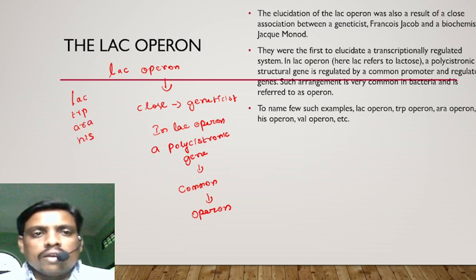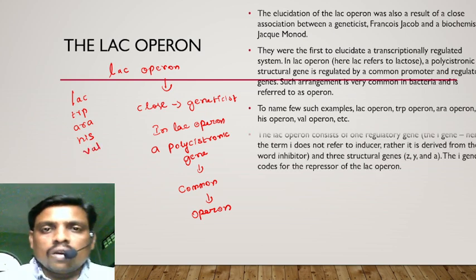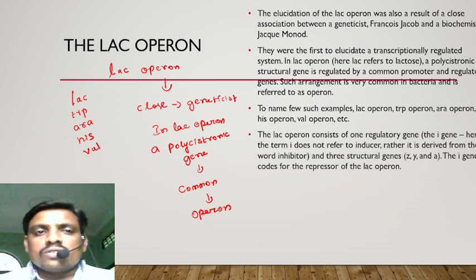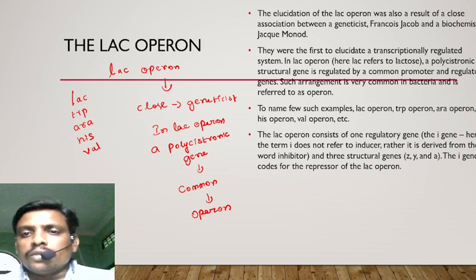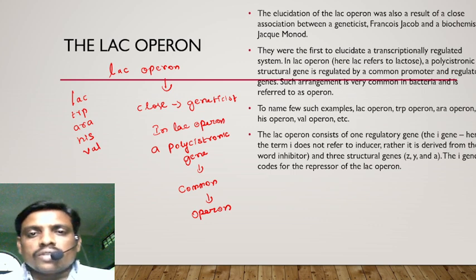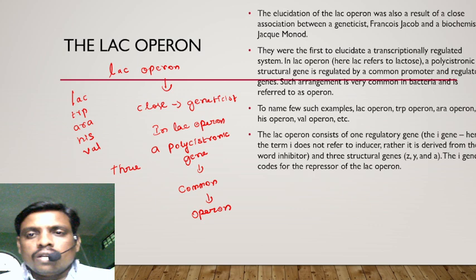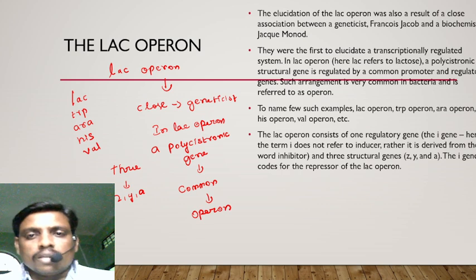The lac operon consists of basically one regulatory gene called I. The I gene does not refer to the inducer; rather it is derived from the word inhibitor. There are three structural genes: Z, Y, and A.